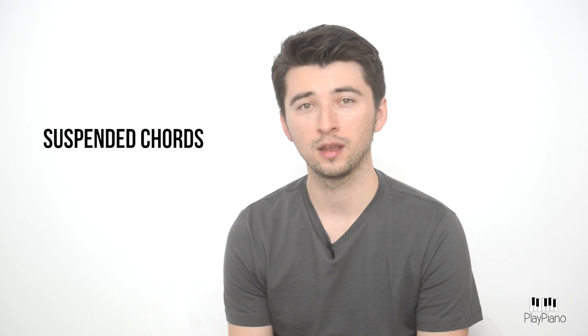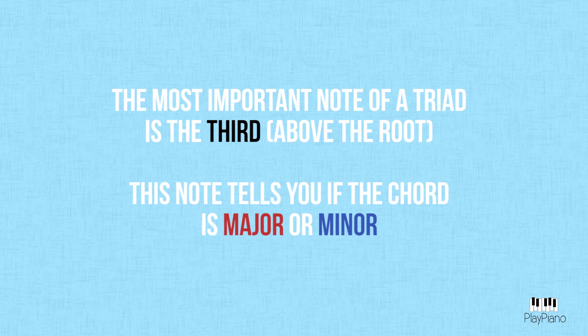The last two chord types are suspended chords. But before we discuss them, it's important to know that in music theory, the most important note of a triad is the third, which tells us the quality — major or minor, for example. It is this note that is being suspended. In its place, it's either the fourth degree — a perfect fourth — or the second, which is the major second.